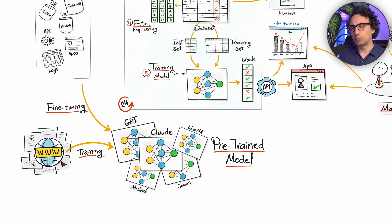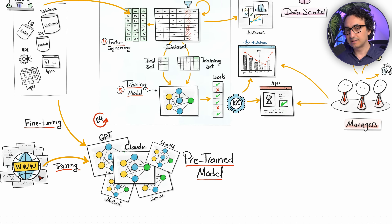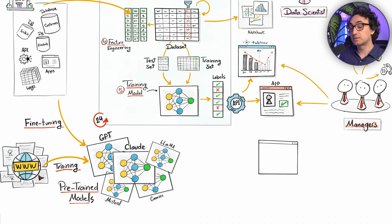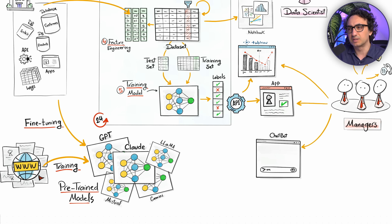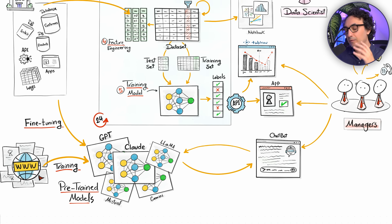Why do we need LLMs? Think about it: if every time a stakeholder needs a new report you have to pull data, put it in Power BI, and present it — that's really slow. Instead, we can let users have a direct conversation with the model. They could ask things like 'why are customers leaving Region B?' or 'summarize all feedback from cancelled users.' This is far better than waiting for a Power BI report each time.